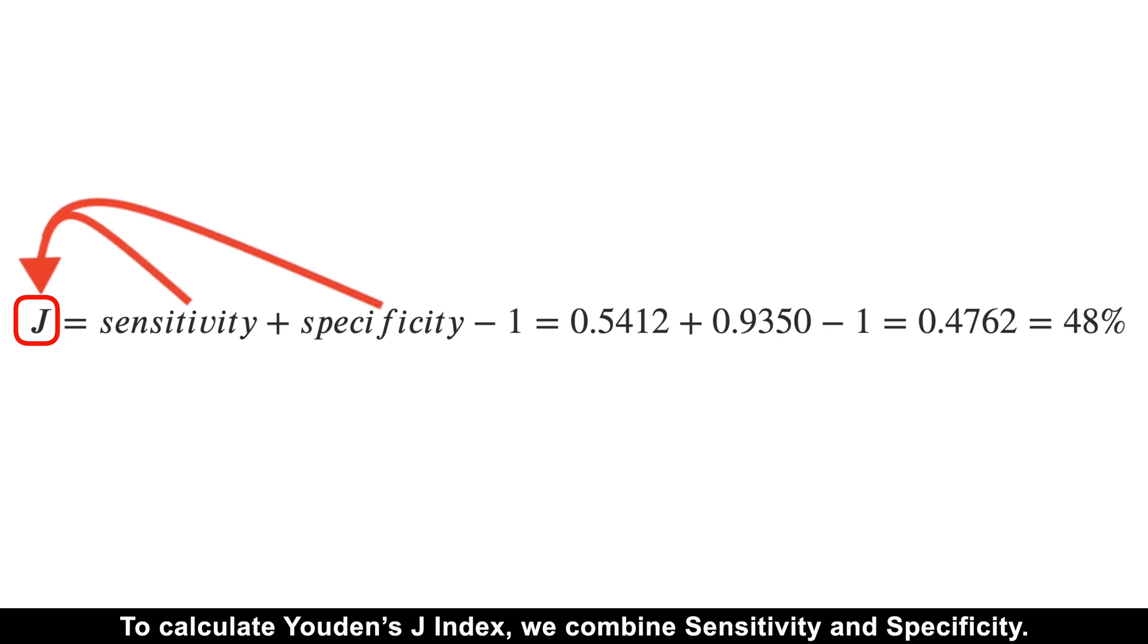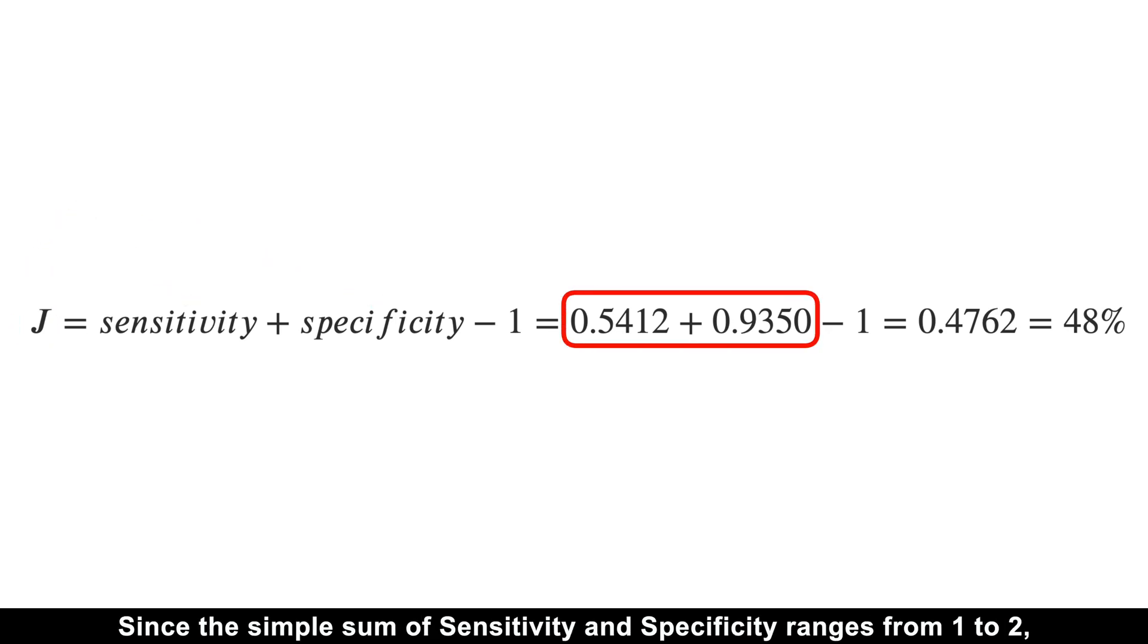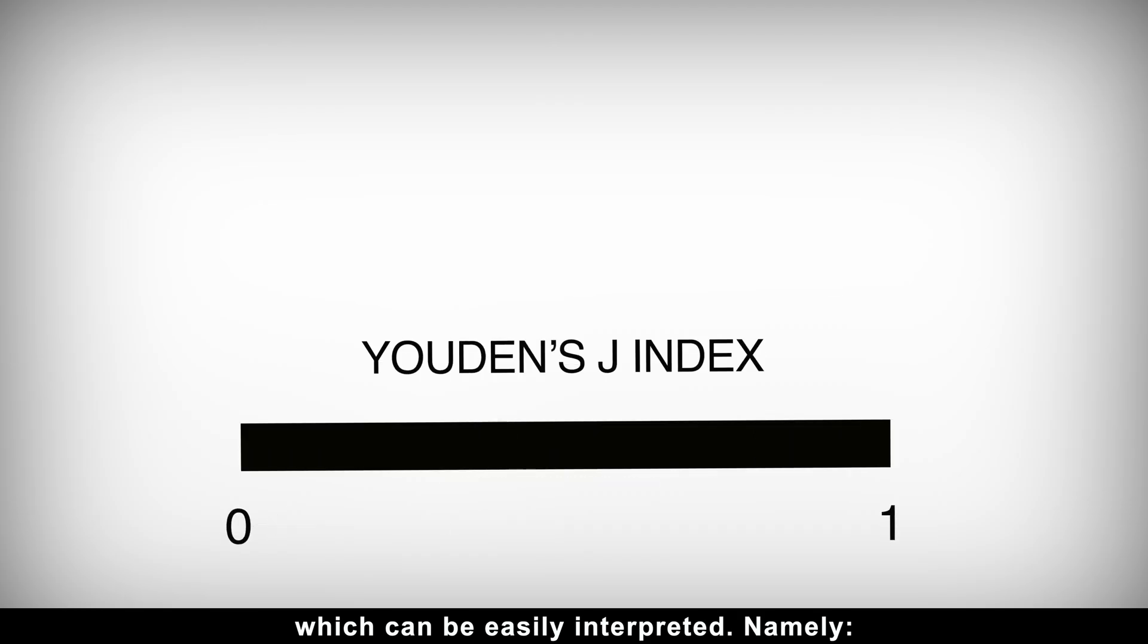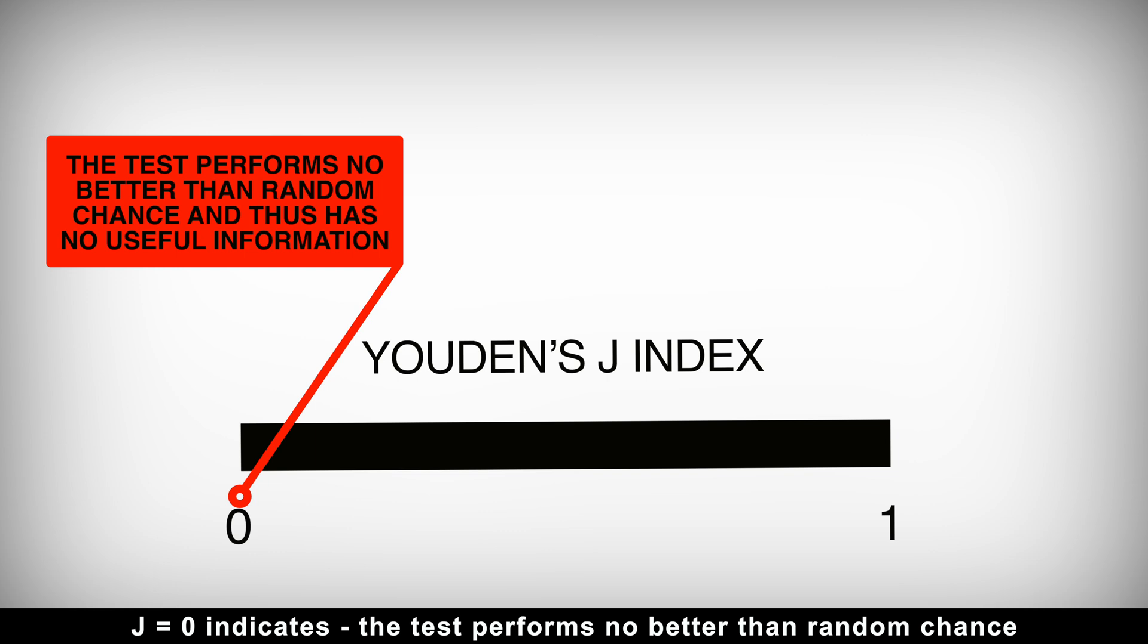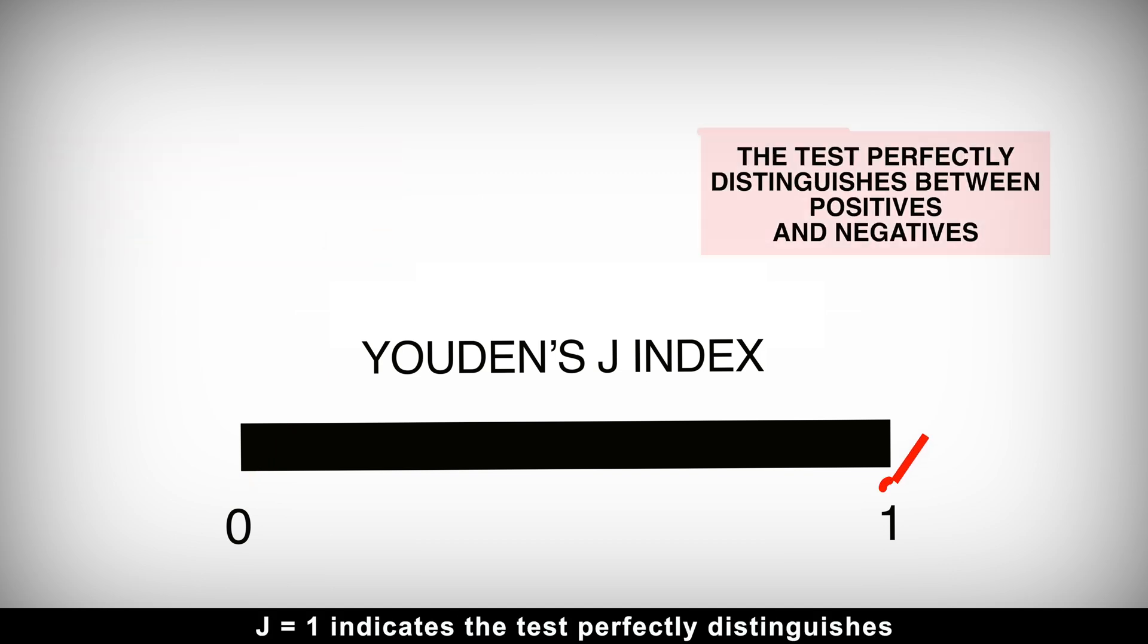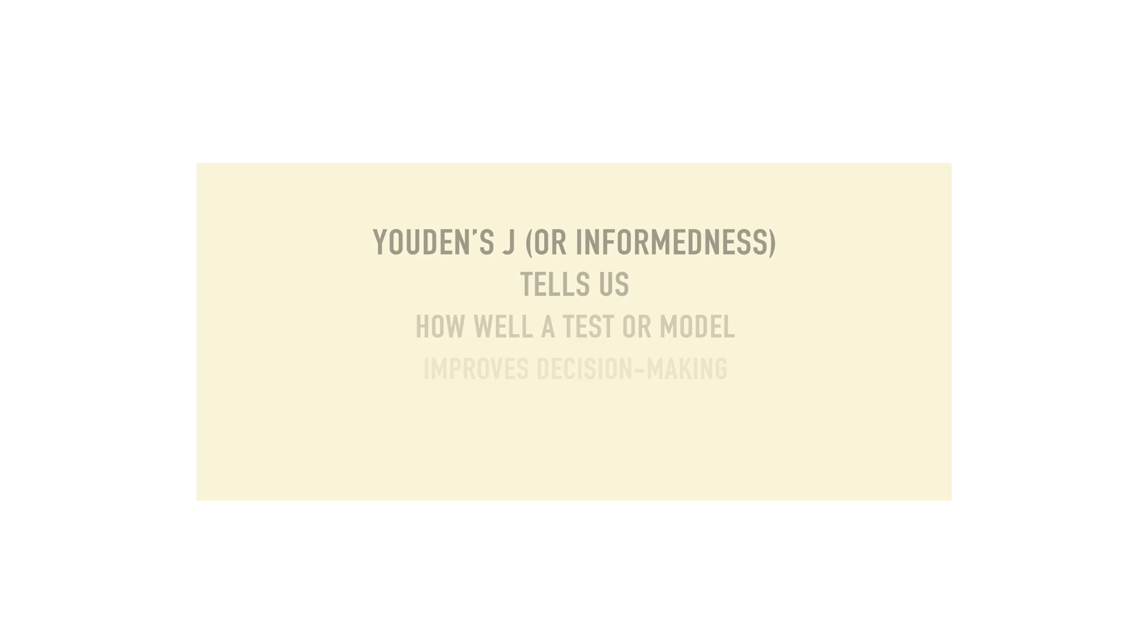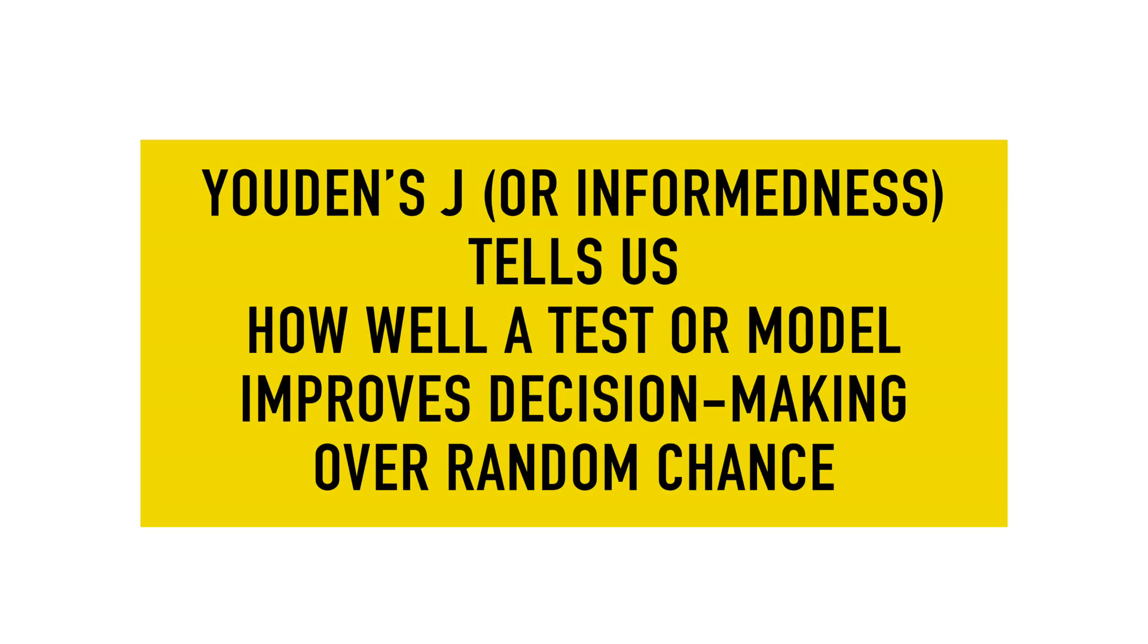To calculate Youden's J index, we combine sensitivity and specificity. Since the simple sum of sensitivity and specificity ranges from 1 to 2, which is not easily interpretable, the minus 1 in J's formula normalizes the scale to range from 0 to 1, which can be easily interpreted. Namely, J equals 0 indicates the test performs no better than random chance and thus has no useful information. J equals 1 indicates the test perfectly distinguishes between positives and negatives. In short, Youden's J, or informedness, tells us how well a test or model improves decision-making over random chance.